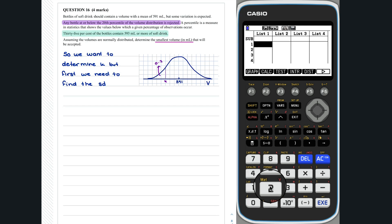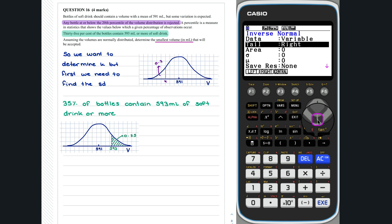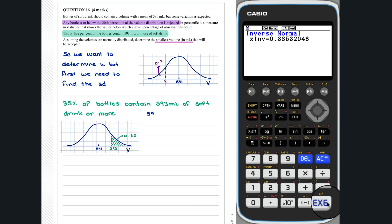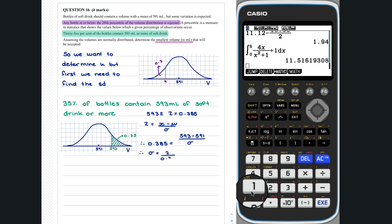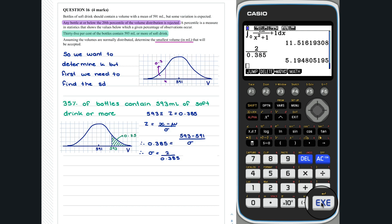In the question, we are told that 35% of bottles contain 593 milliliters of soft drink or more. If we convert this to a z-score, we get... In this case, 593 has a z-score of 0.385. This can now be used to evaluate the standard deviation. Thus, the standard deviation was found to be 5.19.